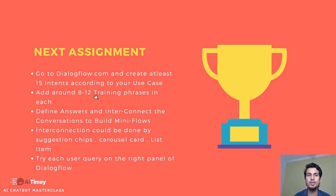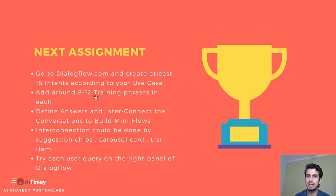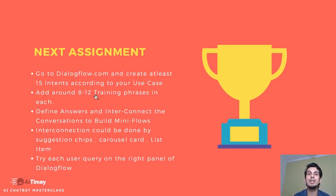For your next assignment: go to dialogflow.com and create at least 15 intents according to your use case. Add around 8 to 12 training phrases in each intent. For follow-up intents that's fine, but all others need those 8 to 12 training phrases. Define the answers of each intent according to your use case — you've already built the flows, so just put in those answers. Interconnect via cards and suggestion chips, keep testing regularly using the 'Try it now' panel, and make sure answers are configured in the Google Assistant response section.